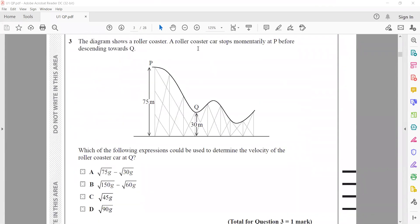The diagram shows a roller coaster. A car stops moving momentarily at P before descending to Q. We know the change in potential energy equals kinetic energy. At point P we have potential energy 1, and at point Q potential energy 2. So PE1 minus PE2 equals kinetic energy. That's MGH1 minus MGH2 equals half MV squared.